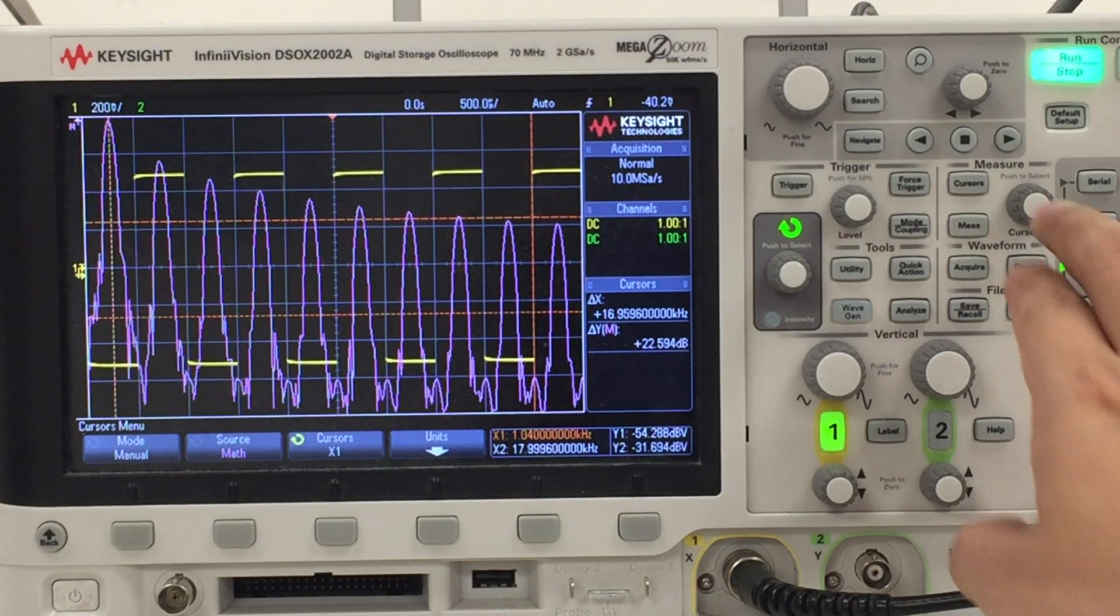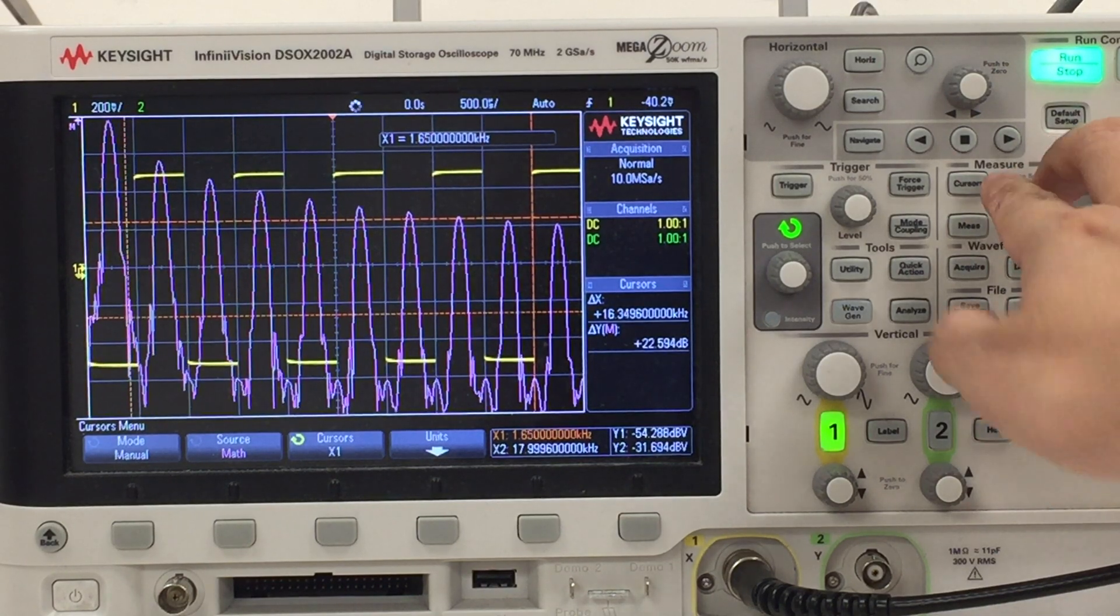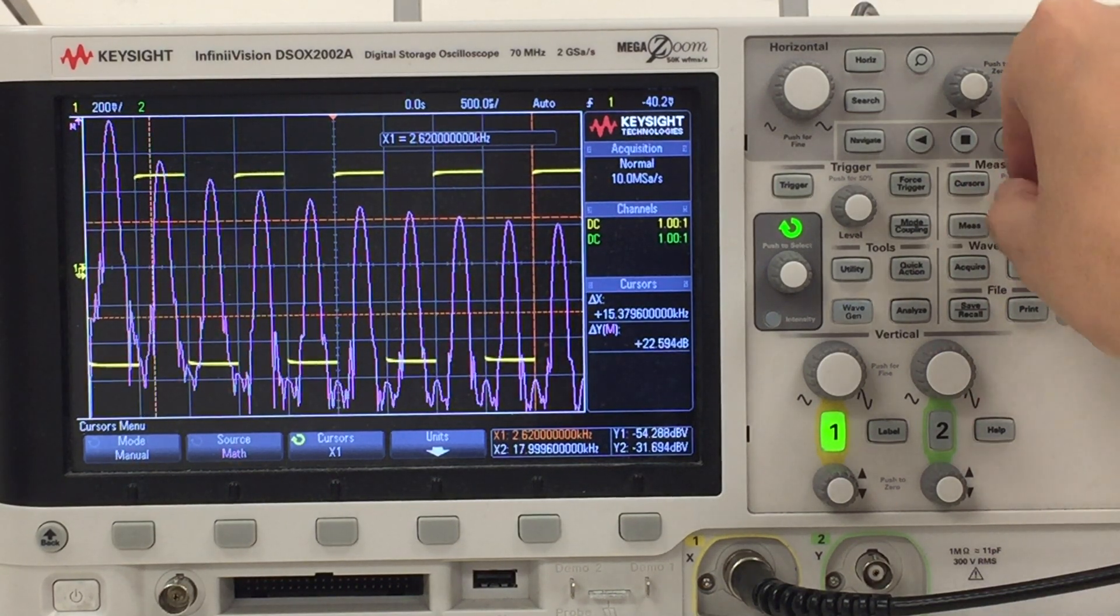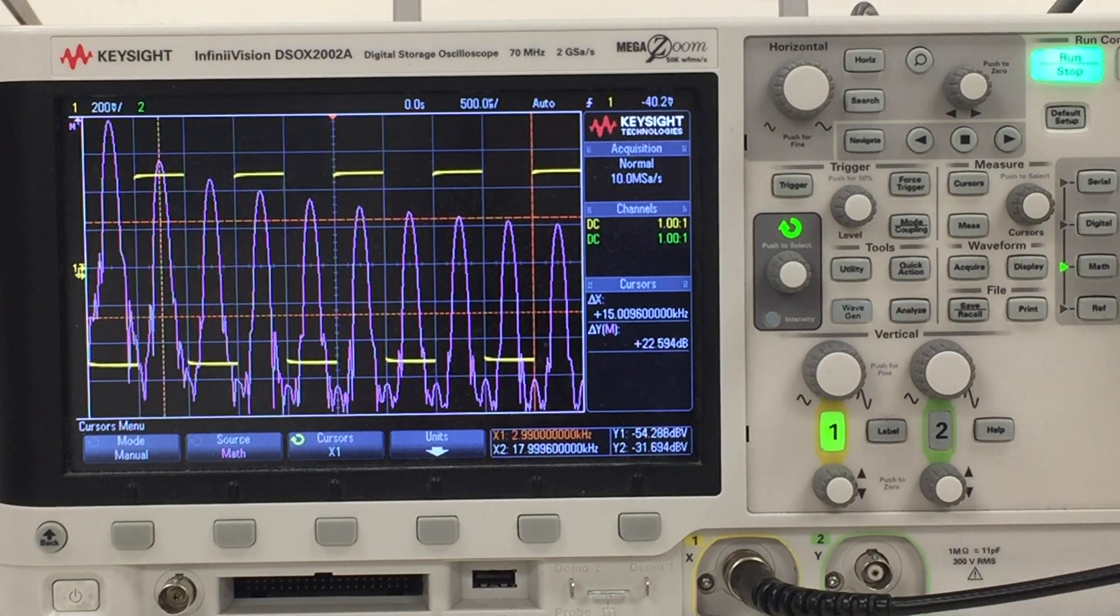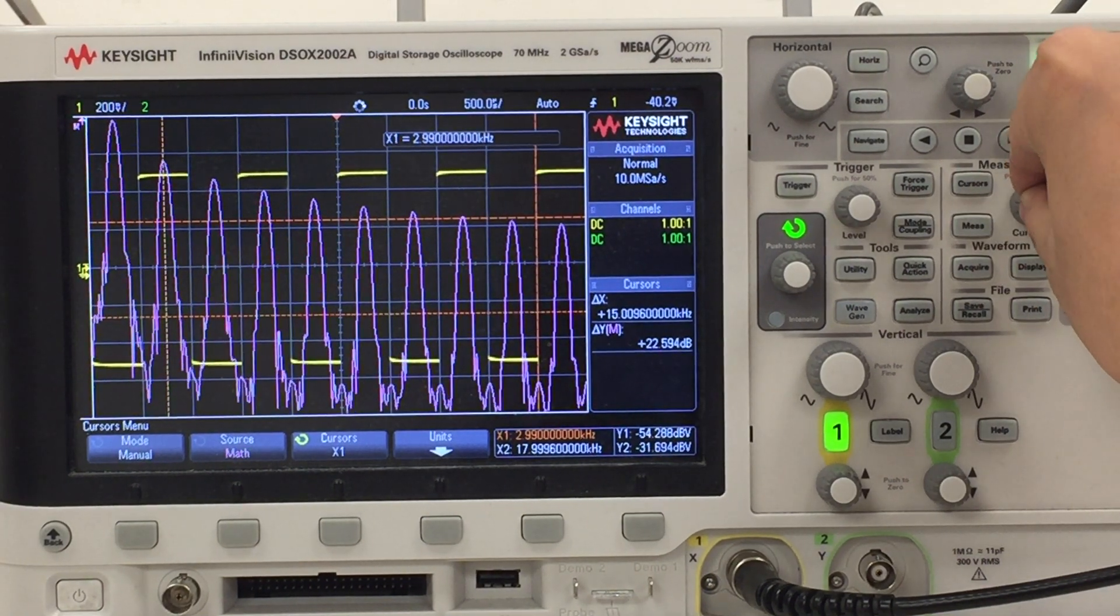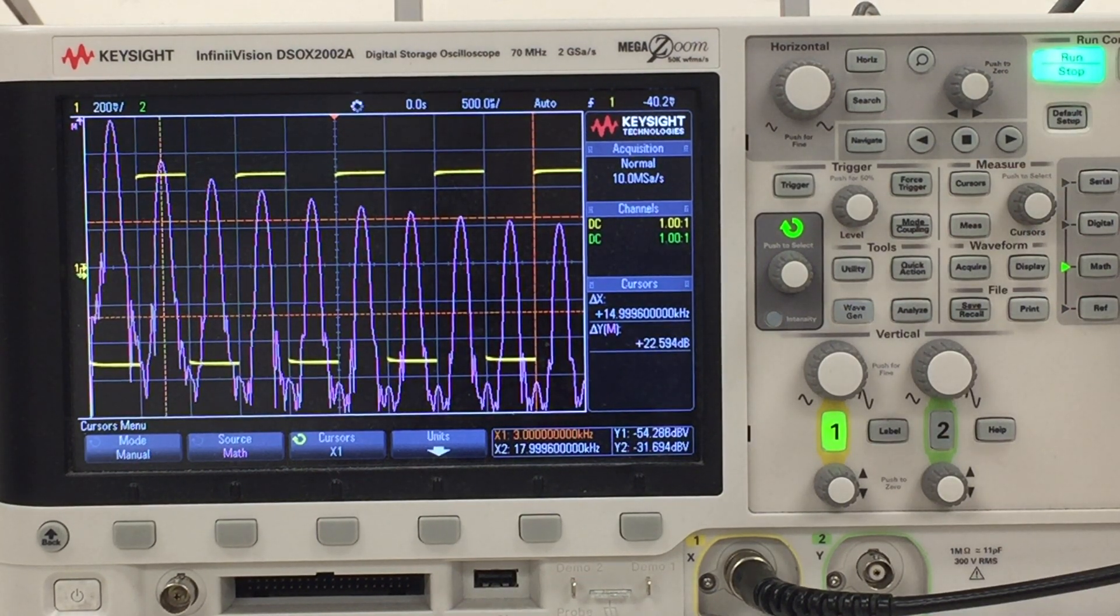The second peak, let's still try to move the x-axis and align it with the second peak. Okay, 2.99 or 3 kHz exactly. That's what we expect, the third harmonic, which is one of the odd harmonics.